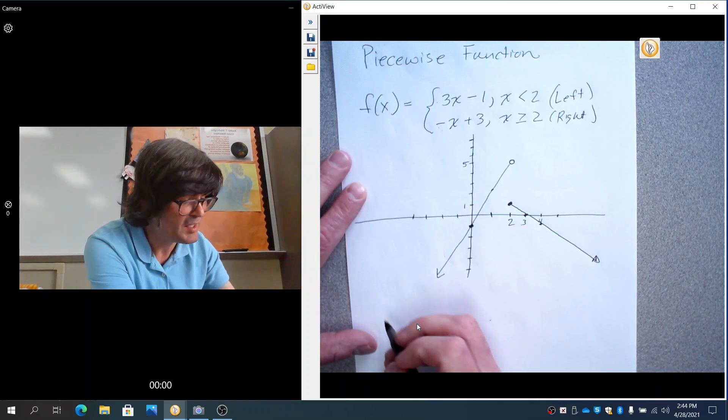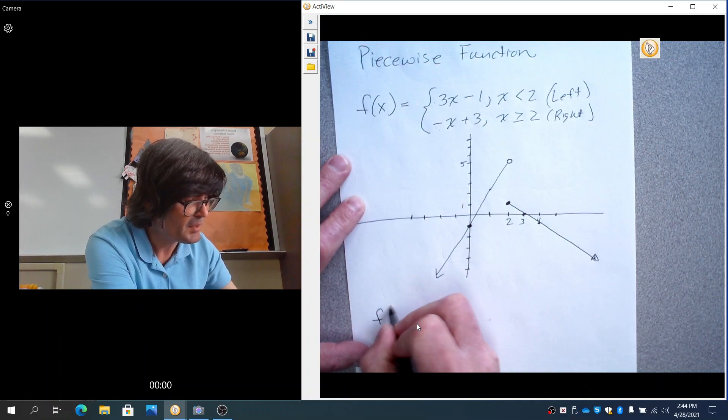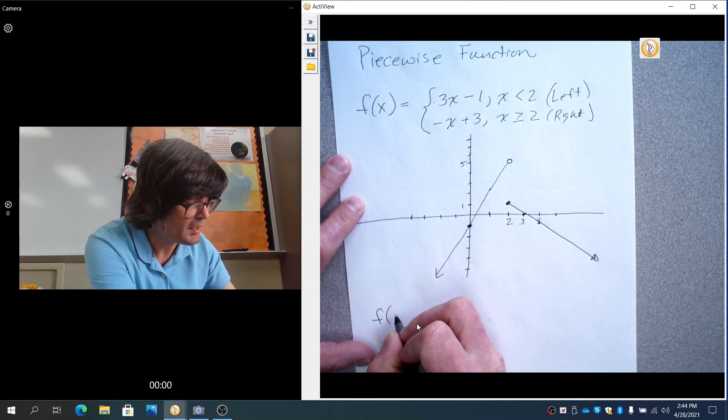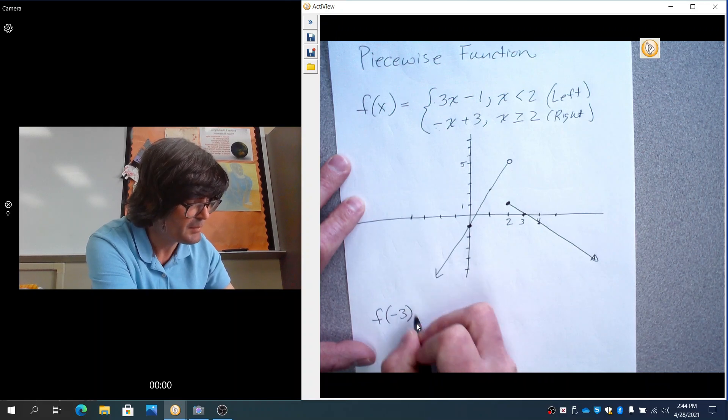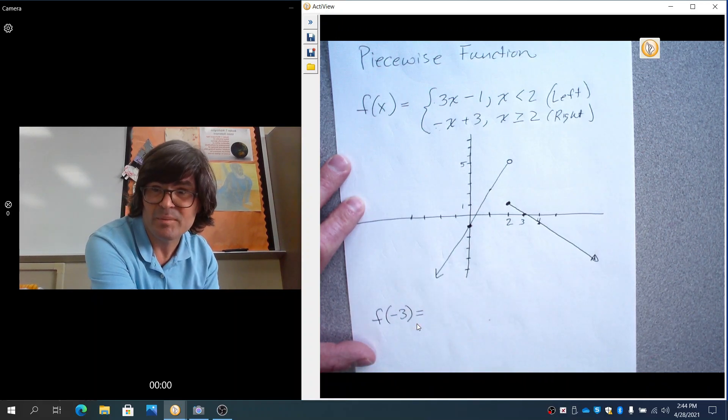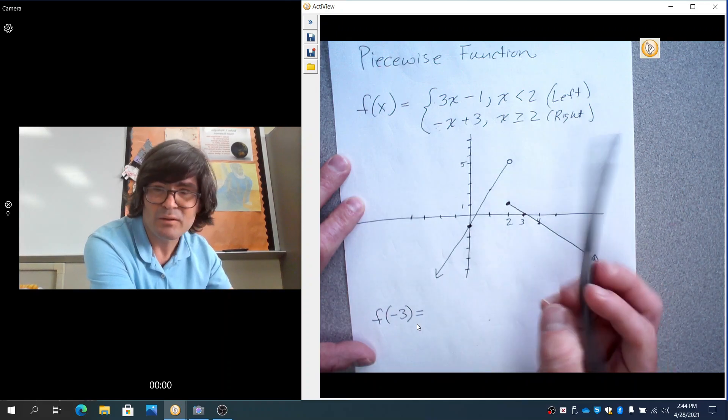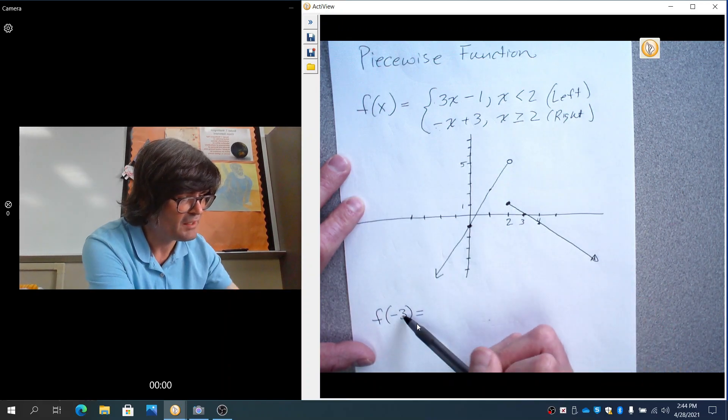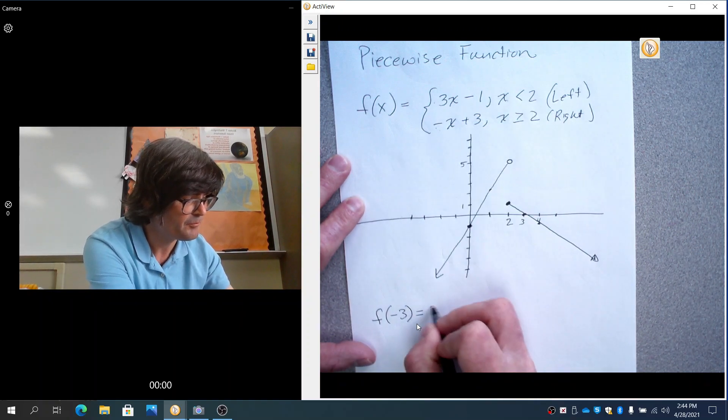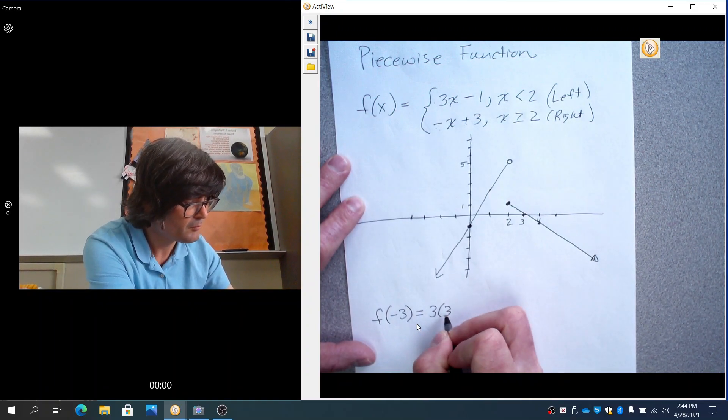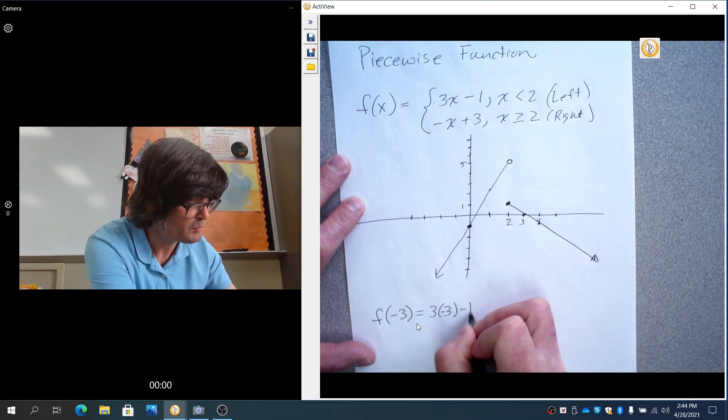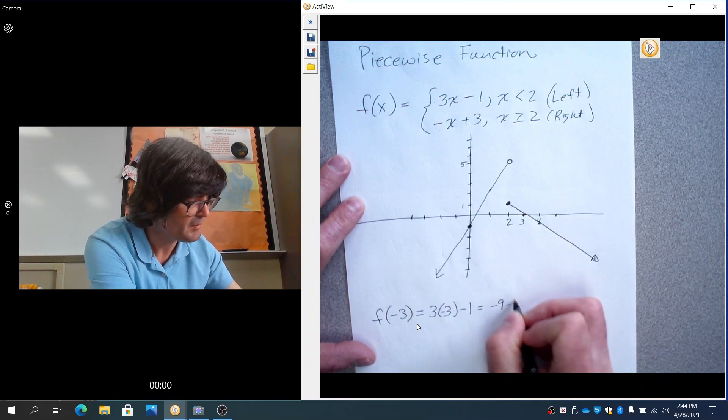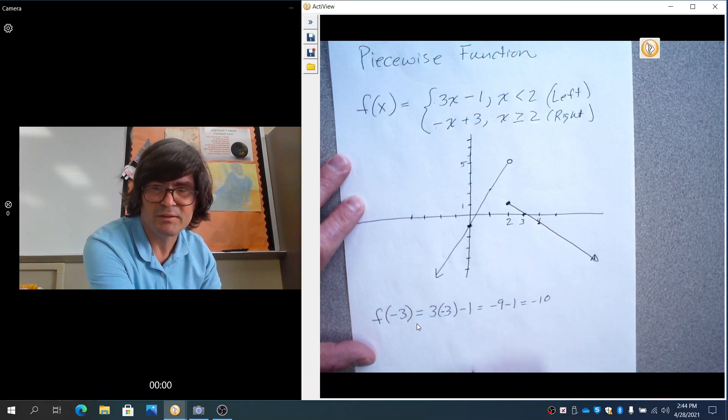If you want to evaluate a point with a piecewise graph, you just have to pay attention to what piece you're on. So, for example, f of negative 3, that would be me plugging in negative 3 for x and seeing what y is. Well, you have to know which piece that belongs to. Negative 3 is less than 2, so it's going to belong to this piece. 3 times negative 3 minus 1 is negative 9 minus 1. That's negative 10.